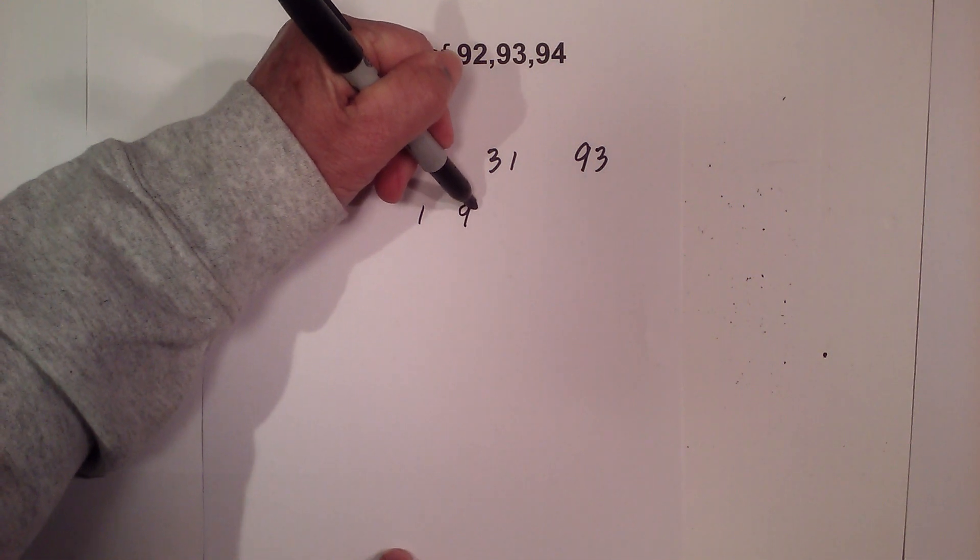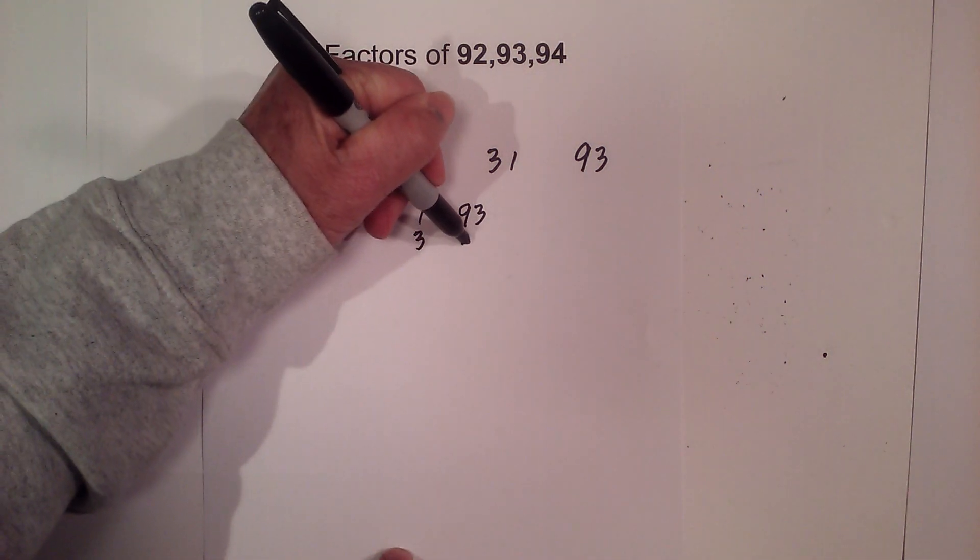And in pairs they are 1 times 93, 3 times 31.